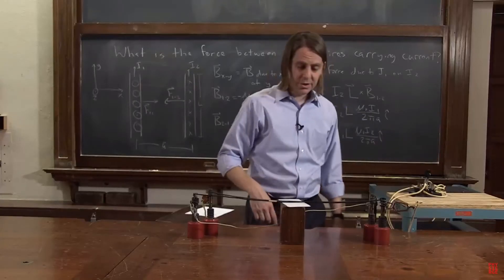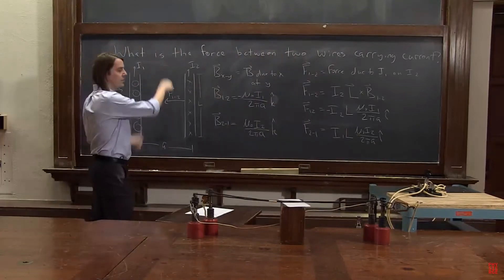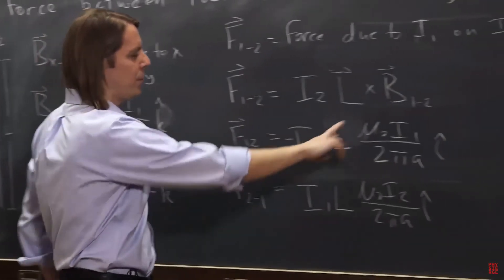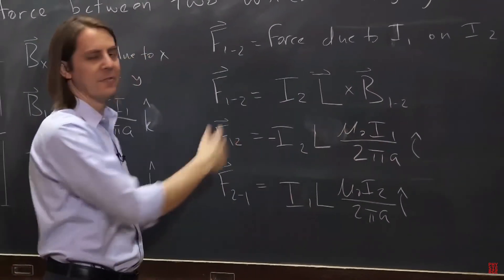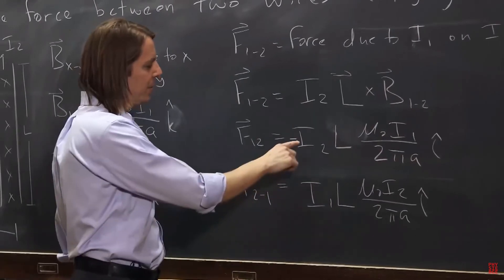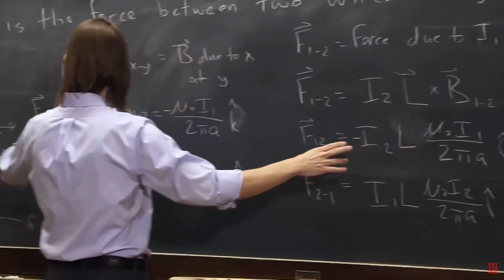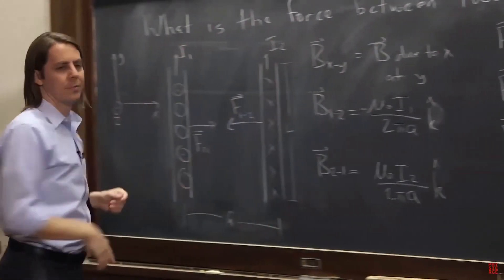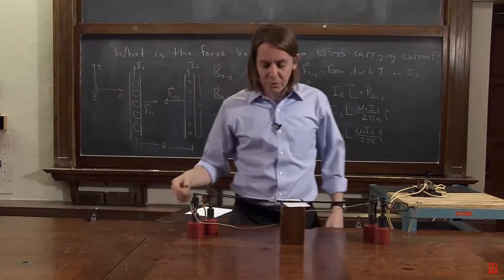Now you could ask, what if we had the current going opposite ways? Well, you could look at this and maybe figure it out. Really what you're talking about doing is flipping the sign of one of these currents. Say we flip the sign of I2. Then what would happen? Well, if we flip the sign of I2, suddenly this will be positive. This wire would feel positive force and this one would be negative. This wire would feel a negative force. If you flip the sign of one of the currents, it makes the force become repulsive.